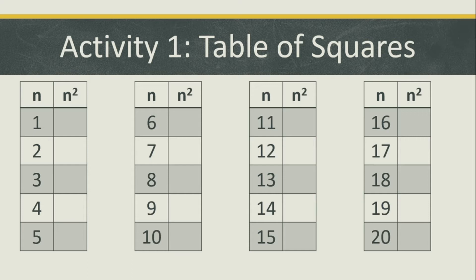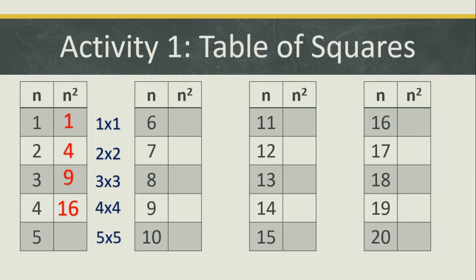Let's say we're going to square 1 — that is simply 1 times 1 and the answer is 1. So 2 times 2, the answer is 4. 3 times 3, the answer is 9. 4 times 4, the answer is 16. 5 times 5, the answer is 25. 6 times 6, 36.